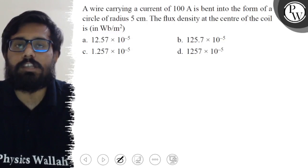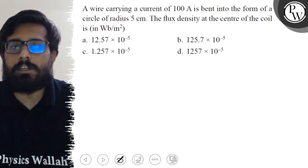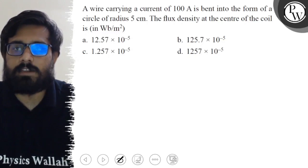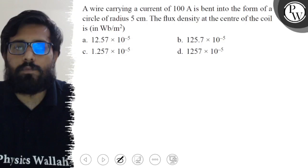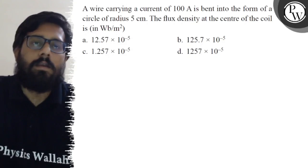The first option is 12.57 × 10⁻⁵, second option is 125.7 × 10⁻⁵, third option is 1.257 × 10⁻⁵, and your fourth option is 1257 × 10⁻⁵.